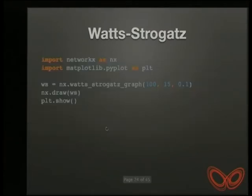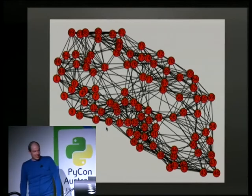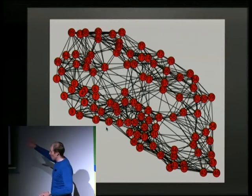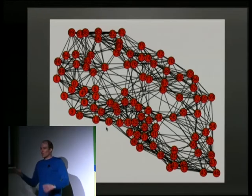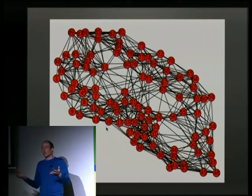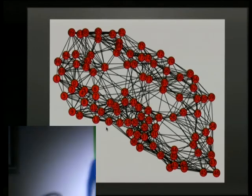NetworkX makes the Watts–Strogatz graph really easy to produce. You get a graph that, even visualised like this, has quite a different structure. Within this you would find lots of little cliques — groups of people that are really tightly meshed together with very loose connections to other groups. If you think about communities and society, that's exactly how we are connected. This is a great model for that kind of stuff.